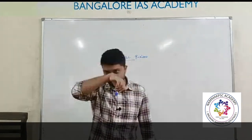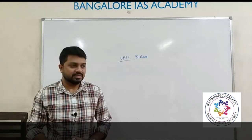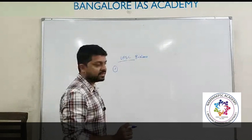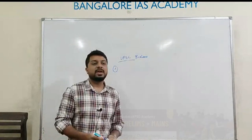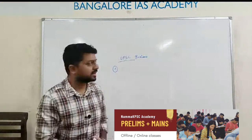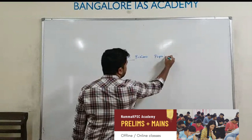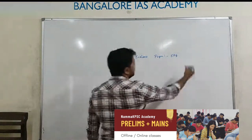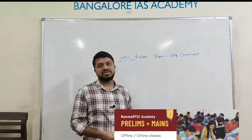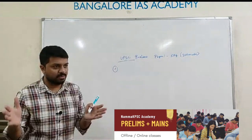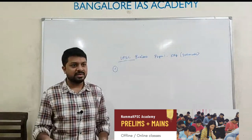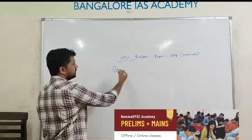How many topics are there in UPSC Paper 1? Seven topics. In UPSC also there are two papers — Paper 1 and Paper 2. Paper 1 decides whether you are going to write mains or not; Paper 2 is just qualifying in nature. Paper 1 has 100 questions worth 200 marks — each question carries two marks. These 100 questions decide the entire year's effort.